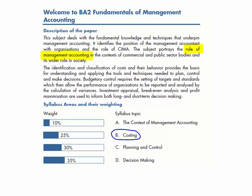Your understanding of that terminology is absolutely crucial to take you through not only this Fundamental Management Accounting paper, but also into your future management accounting papers. This terminology is all to do with identifying and classification of costs. You are going to see terms such as fixed costs, variable costs, and semi-variable costs. You really need to be very confident about what that terminology means and be able to apply that information in the relevant syllabus areas.